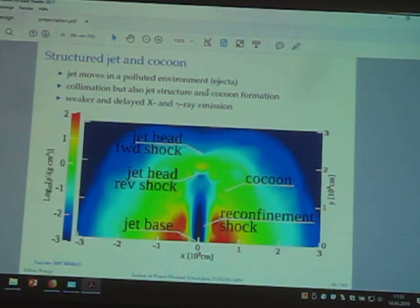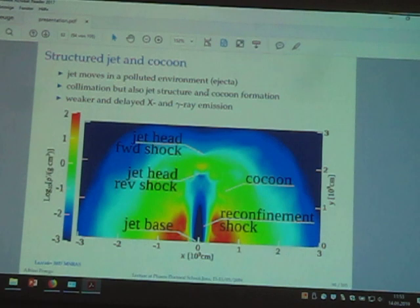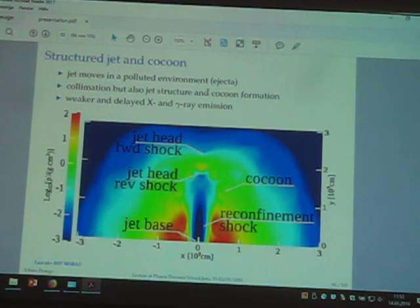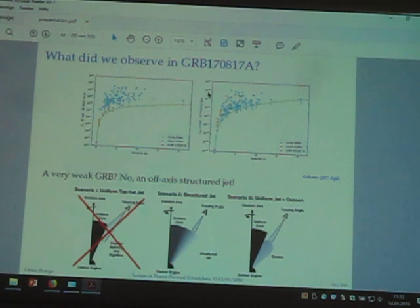This is happening on the polar axis. This is more or less the origin of this cocoon — some people call it a cocoon, some people call it a structured jet. I am telling you about this because after the detection of GW170817 we observed a gamma-ray burst. Let's have a look at the data.